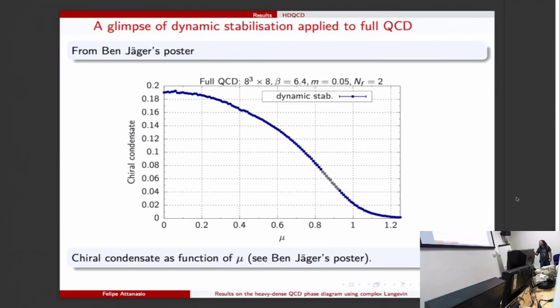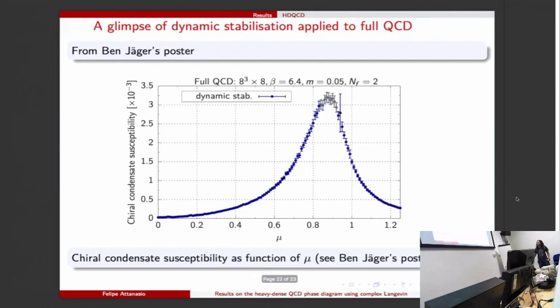Here I show the susceptibility for the chiral condensate. Now you can see some error bars - they get of course larger around the transition but that's more than expected. But still this plot looks really nice.